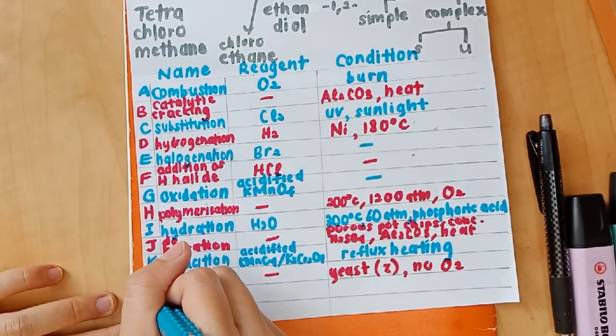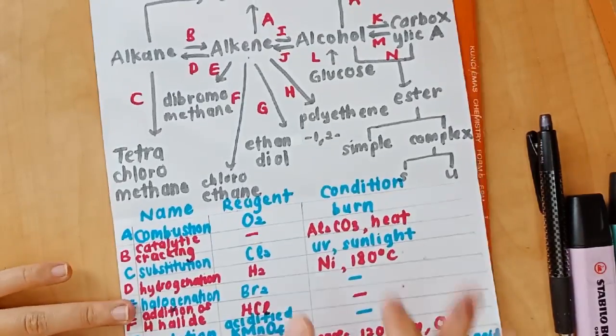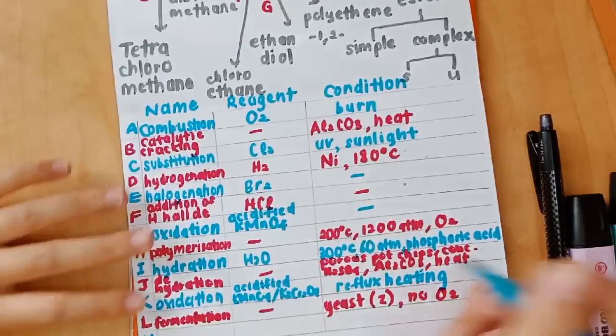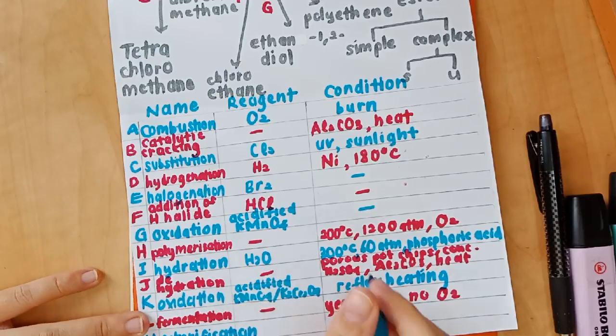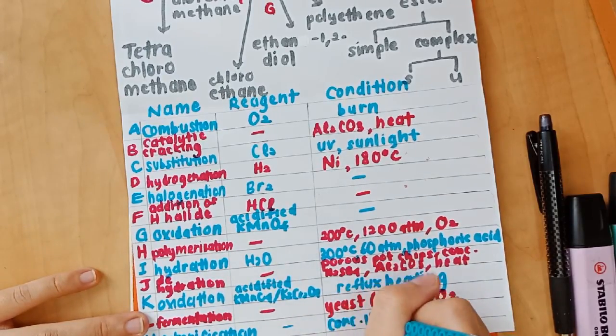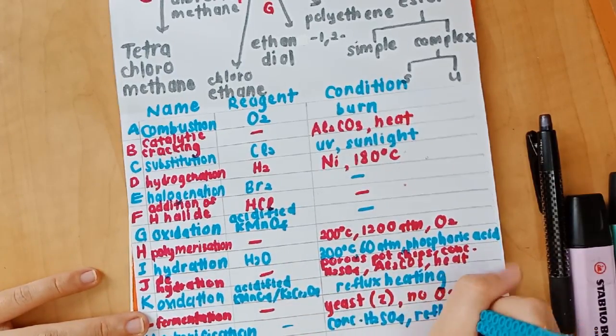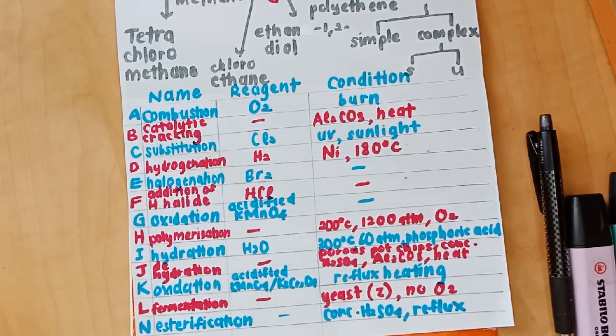And then N. When alcohol is added to carboxylic acid, ester will be produced through the reaction called esterification. There is no reagent for this. But then you need concentrated H2SO4.